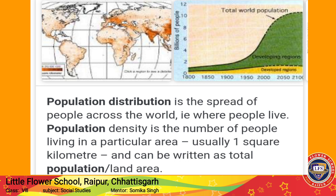यहाँ पर बताया जा रहा है कि population density को total population land area से show कर सकते हैं। Pattern of population distribution वो होता है जिसमें people अलग-अलग जगाओं पर रहते हैं — कुछ Asia में, कुछ Europe में, कुछ Africa में। दो continents — Asia और Africa — में सबसे ज़्यादा population है, और 60% of the world's people just 10 countries में रहते हैं।